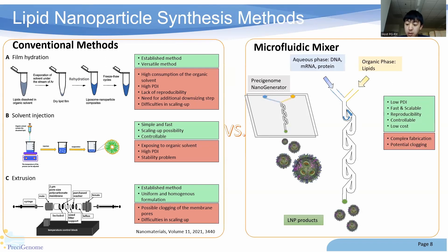And this is where microfluidics come in. Compared to the conventional methods, microfluidics offer superior control over LNP characteristics such as size, surface charge, and drug loading. By controlling parameters such as flow rates and flow rate ratio of the reagents, LNP characteristics can be carefully tuned to whatever application they are being used for. This level of precision can lead to improved drug delivery and therapeutic efficacy. Microfluidics are also much more easily scalable and allow for less wasted material during the LNP synthesis process, which greatly reduces costs.